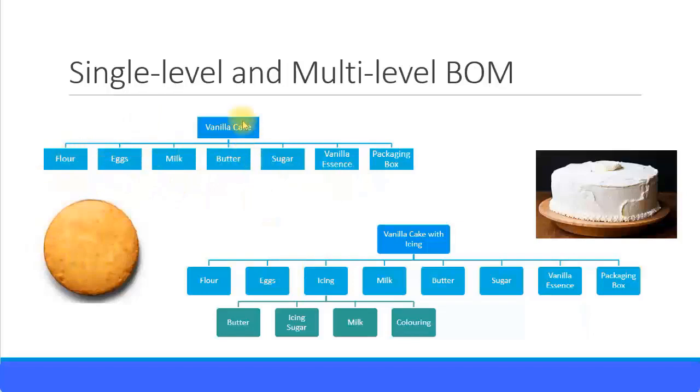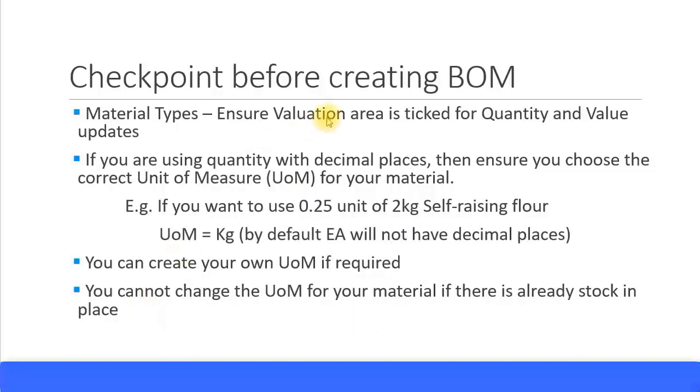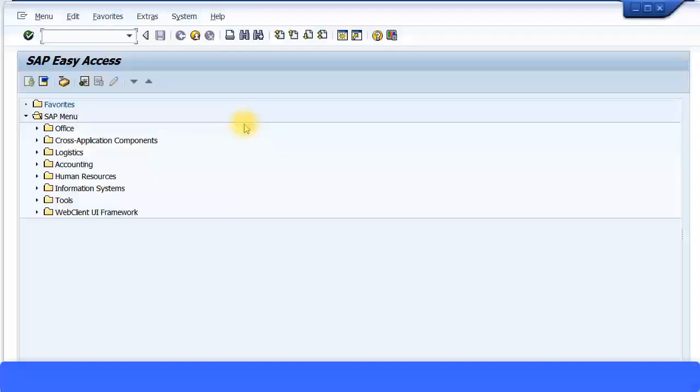Before you start creating the Bills of Materials in the system, there are some important checkpoints you need to see. The first important checkpoint is to ensure that the material types—remember the material types which we created some time back, the standard ones like ROH for raw materials, VERP for packaging materials, and another one for finished goods—ensure that these material types have the valuation area ticked for quantity and value updates. Let's go and check the configuration.